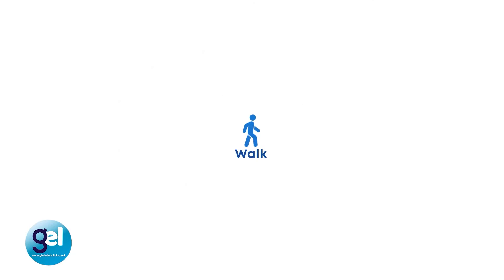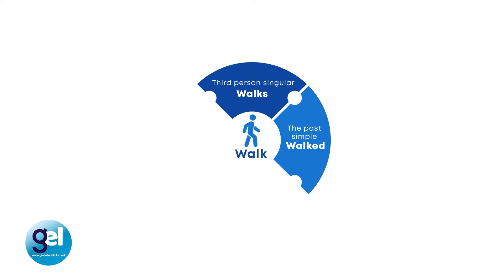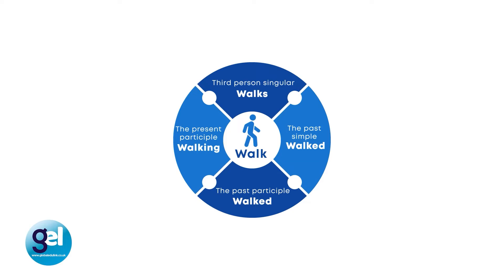Now let's look at a regular verb. The base form of this example is 'walk.' The third person singular is 'walks' — again, we're adding an S. In the past simple we add ED, so it becomes 'walked.' In the past participle it's also 'walked.' And the present participle is 'walking.' With regular verbs, the past simple and the past participle are the same — they both add ED to the base form of the verb.